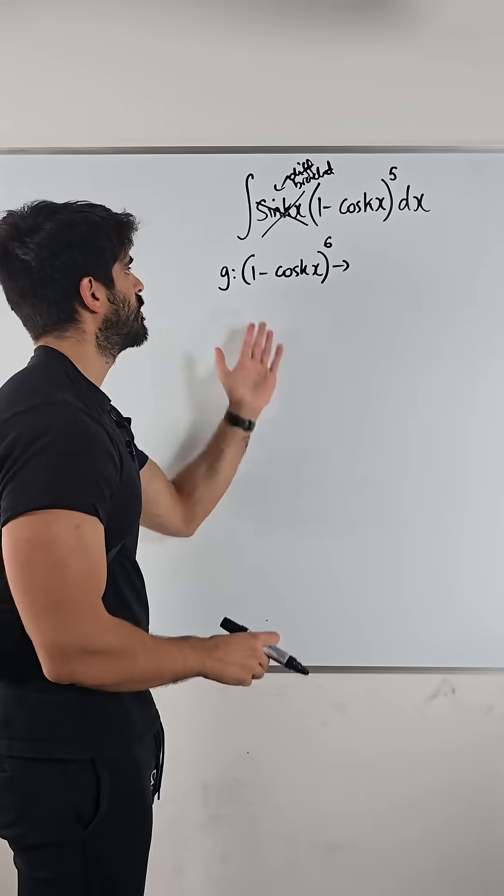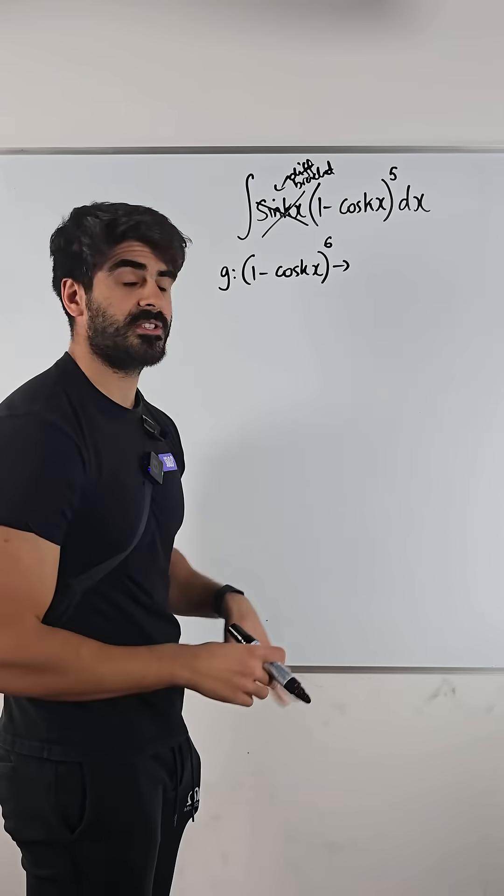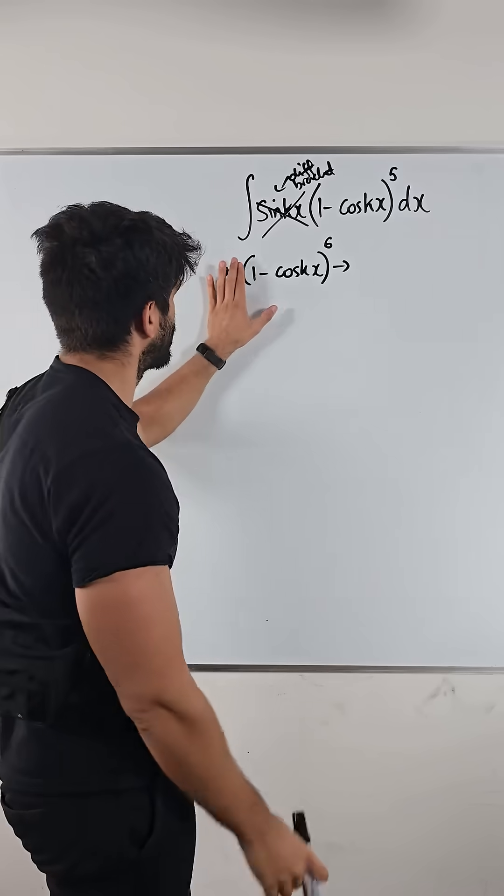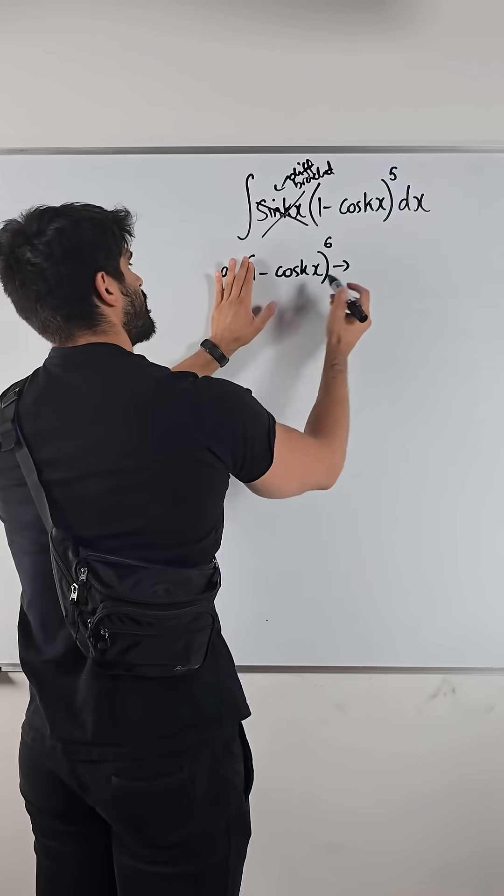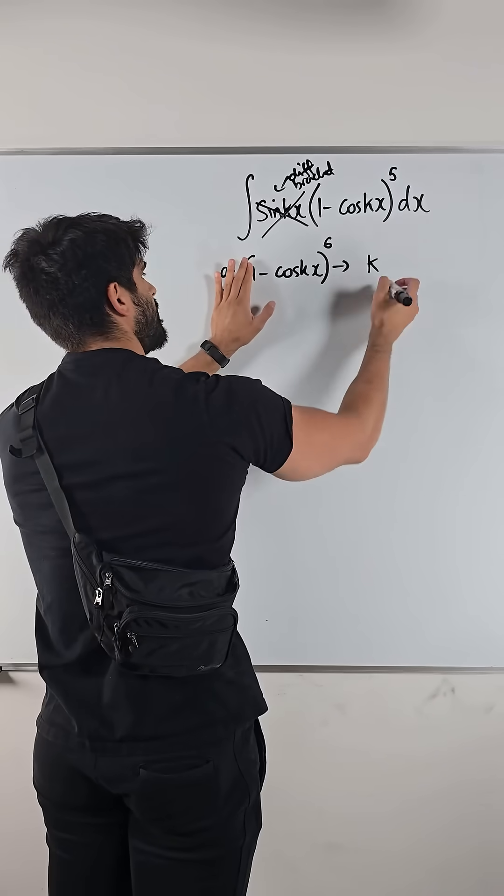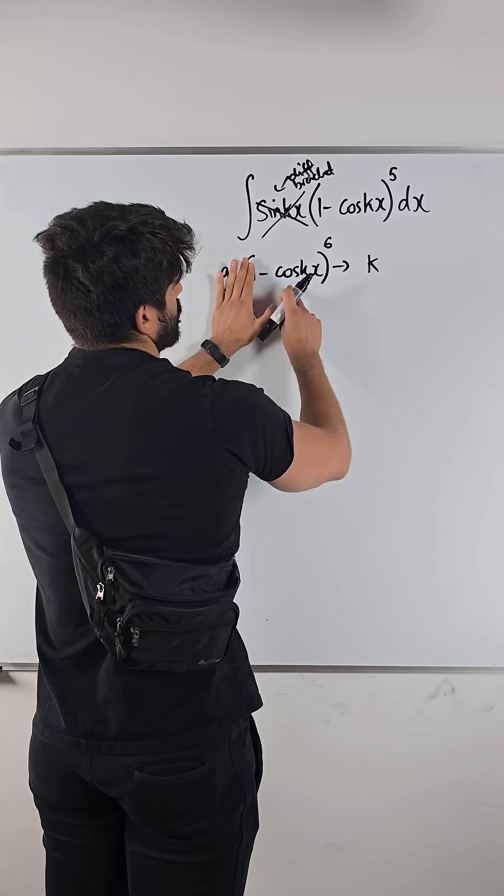So we differentiate what's on the inside first. The one goes to zero. Cos kx, we differentiate the angle first. kx differentiates to k, then we have the minus there.